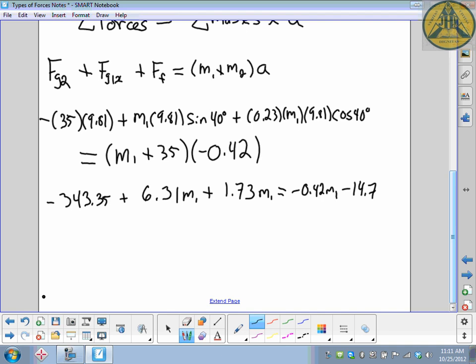It looks a little big, but all it is is a kind of grade 9 equation with variables on both sides. Watch your signs and be careful when you work it out. So I'm going to put all of my M1s onto the left side and all my numbers on the right side. So it'll end up being 6.31 added to 1.73 and then add to that the 0.42 because it changes sign as it crosses the equal sign. So on the left I have 8.46 multiplied by my mass M1. That has to equal, bring my 343 to the other side becomes positive, so 343.35 subtract 14.7, 328.65.